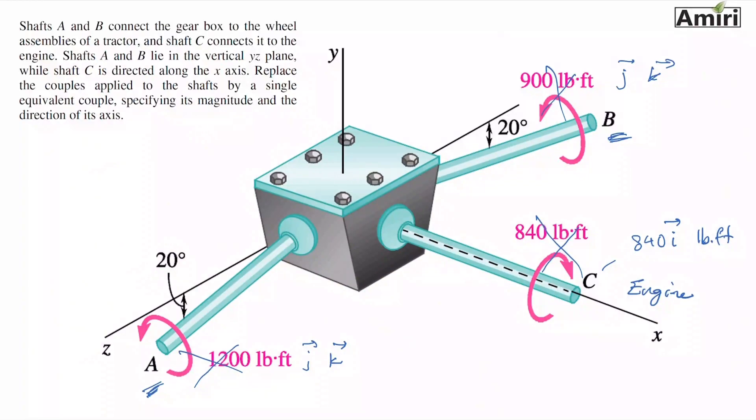The problem doesn't tell you at what point, because the couple moment of a couple is a free vector. This means the location of it is irrelevant. It doesn't have a location, doesn't matter where you put it, it still has the same effect on the system. That's why it doesn't specify to replace it at point A, B, C, or anywhere.